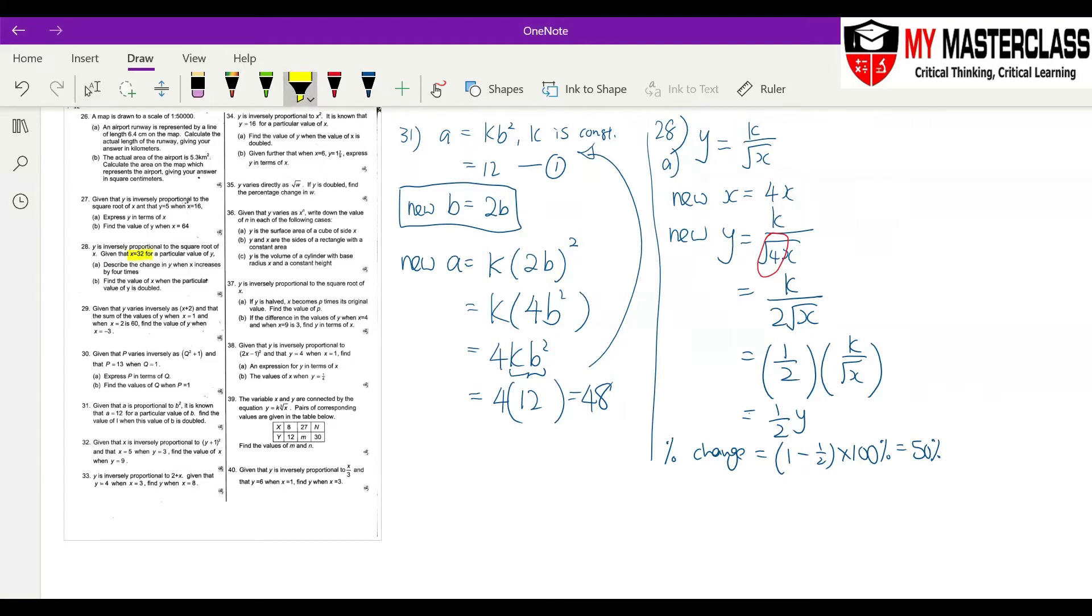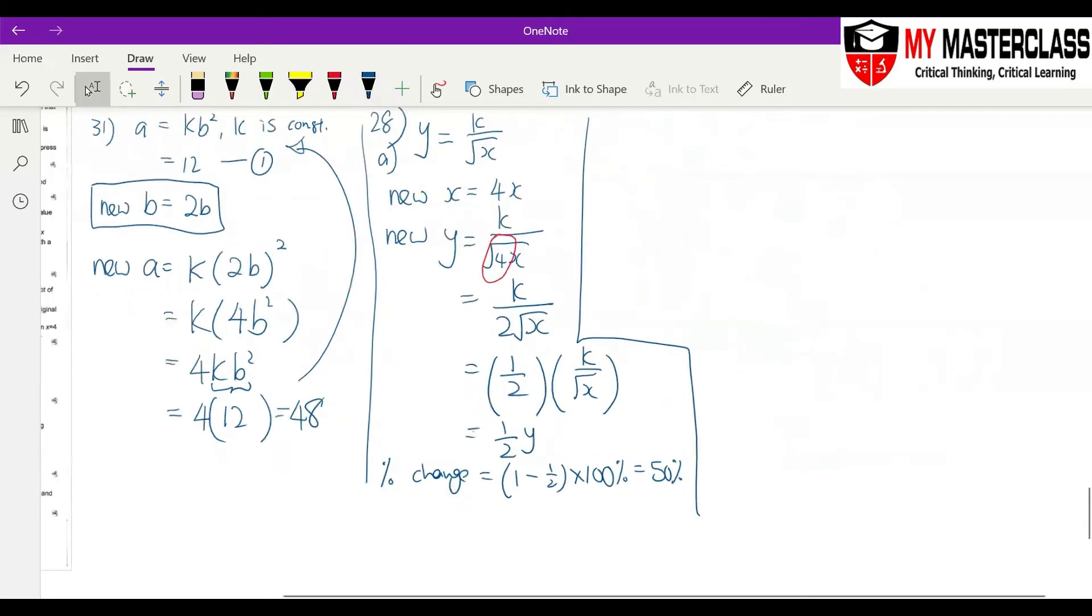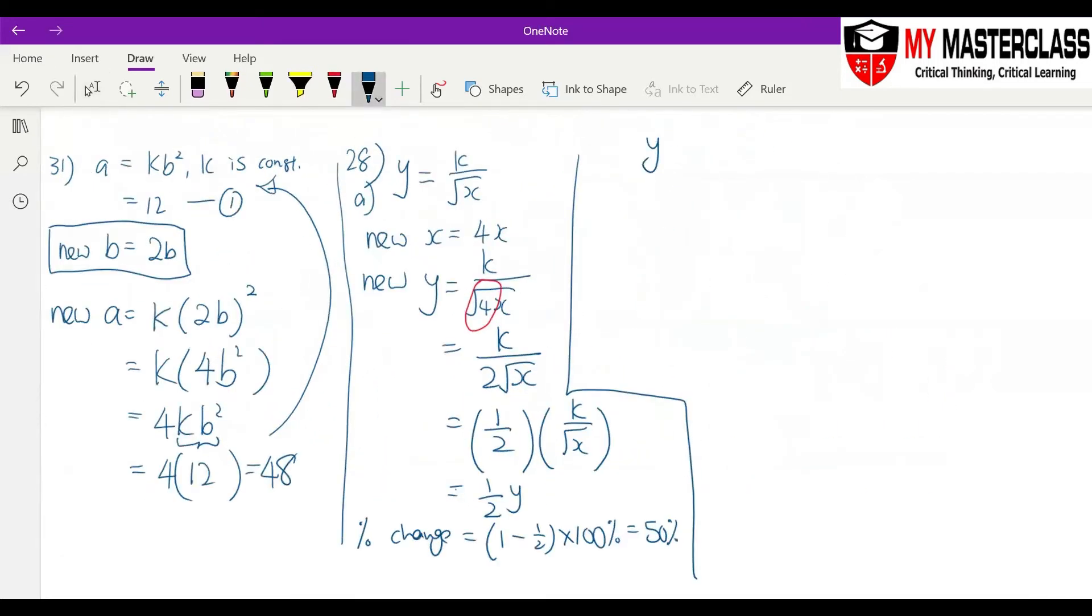28B says that x is equal to 32, find the value of x when y is double. This one, basically it's just change, you've got to change the order. Okay, means that y is equal to k over square root x. Y times square root x is equal to k. Square root x is equal to k over y.